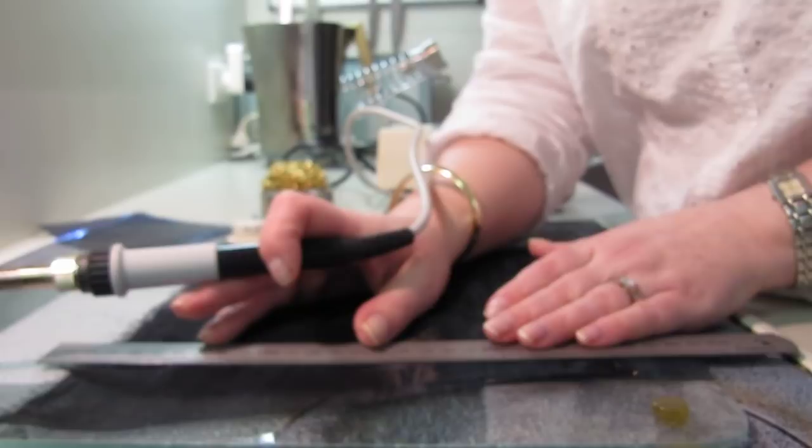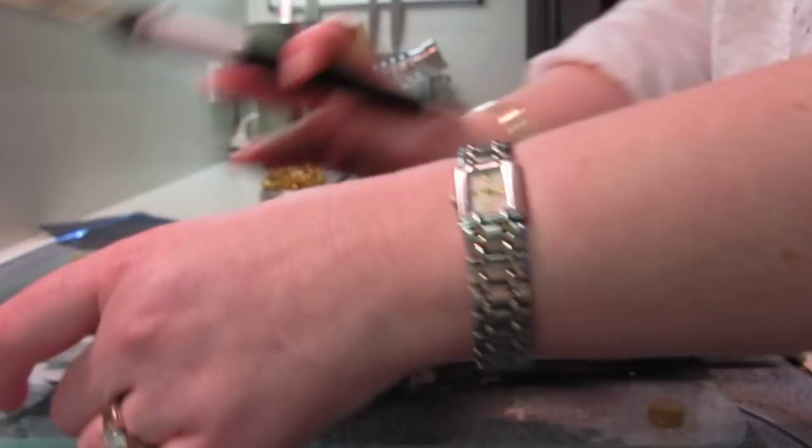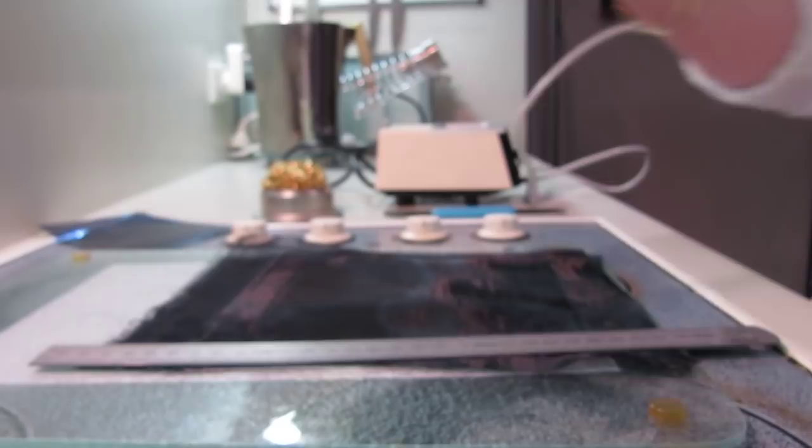Now what you can also do with the soldering iron, I'll just show you even though we don't really need to do it for this piece, is with your straight lines you can cut them off. So by pressing a little firmer or upping your temperature or both you can then just peel that section away.